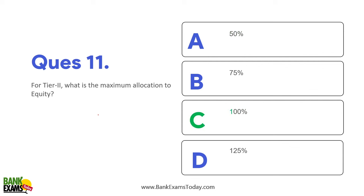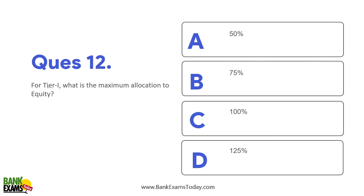What is the maximum allocation for equity? For Tier 2, there is no limit on the allocation towards equity — it can be 100%. But for Tier 1 NPS accounts, the maximum allocation to equity is at most 75%. When we are talking about NPS Tier 1 accounts, the maximum allocation towards equity can be at most 75%. For Tier 2, there is no such limit.